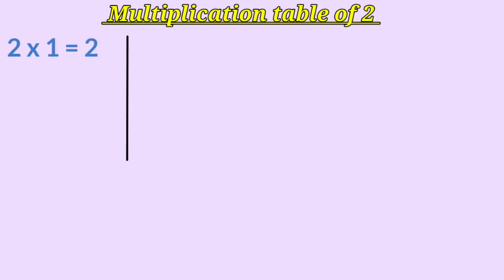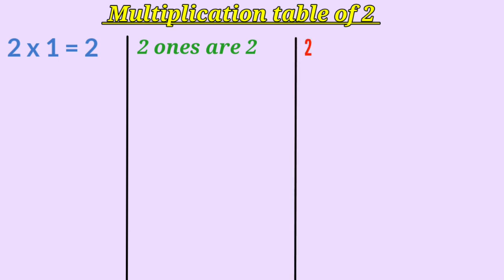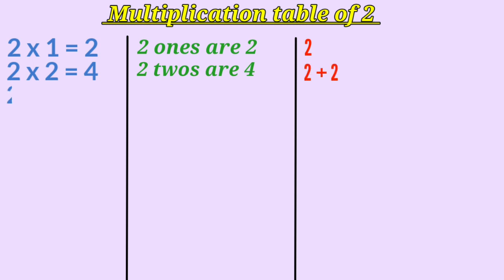Children, for multiplication table of 2, we should first start with 2. That is, 2 multiplied by 1 is 2. Or, 2 ones are 2. Which means we are adding 2 only 1 time. 2 multiplied by 2 is 4. Or, 2 twos are 4. Which means we are adding number 2 only 2 times — that is, 2 plus 2. 2 multiplied by 3 is 6. Or, 2 threes are 6. Which means we are adding number 2, 3 times — that is, 2 plus 2 plus 2.